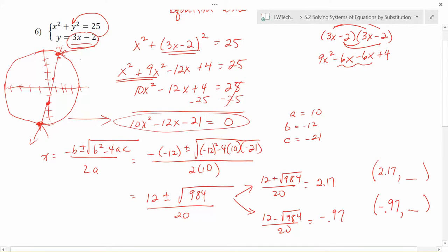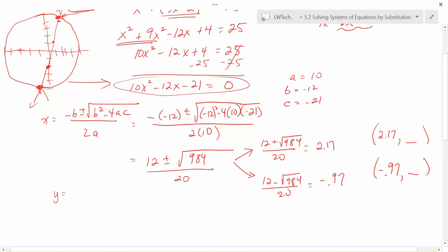But we still need what those y-coordinates are. So we can go back and we can use either equation. I would definitely choose the y equals 3x minus 2 here so you don't have to worry about squares and stuff. And what I need to do is plug in 2.17 and see what I get. And I'm going to need to plug in 2.17 and I'm going to need to plug in negative 0.97 and see what I get. So let's try it. y equals 3 times 2.17 minus 2. And then I'll have to do y equals 3 times negative 0.97 minus 2.